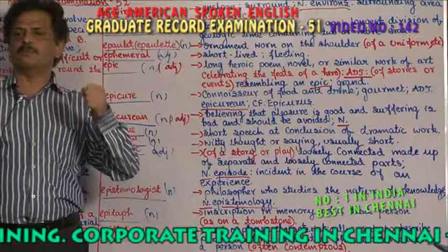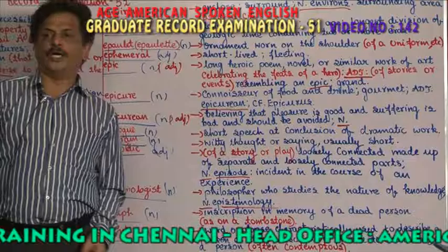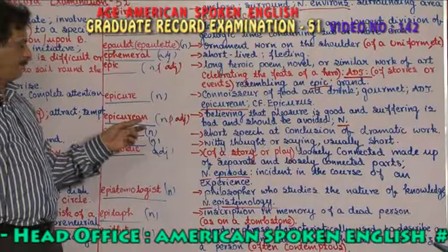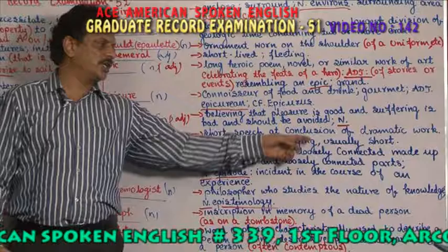Epicurean — believing that pleasure is good. Any person who thinks pleasure is good and suffering is bad, and that suffering should be avoided, is called an epicurean.